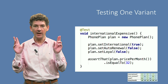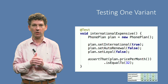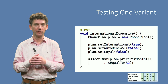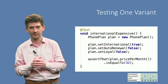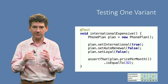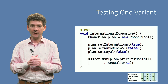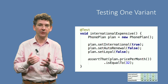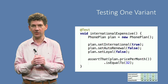It covers the international expensive variant in which the customer has to pay the maximum price of 32 euros, corresponding to the rightmost column of the table. This test creates a fixture — the new phone plan object — and ensures the conditions are met. The field international is set to true, and the others are set to false.